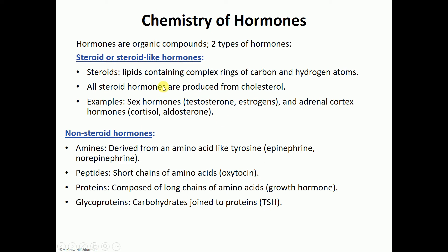Two things to keep in mind when talking about steroid versus non-steroid hormones: steroid hormones are made out of cholesterol, which means it's a lipid — it's fat — and it cannot dissolve in the bloodstream. So how can a steroid hormone made in the adrenal cortex circulate through the bloodstream to reach its target cells if it is not soluble in water? We'll look at that shortly. Non-steroid hormones are proteins, and proteins are water-soluble, so they have no problem circulating in the bloodstream.